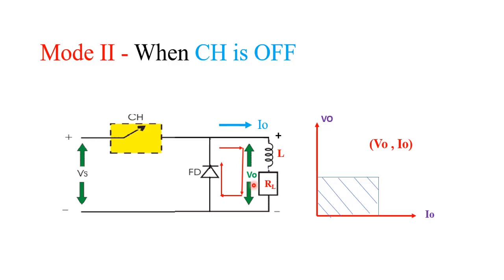In both cases — when the chopper is on or off — the output voltage is positive and the direction of output current is also positive. Therefore, we can say that the chopper operates in the first quadrant.